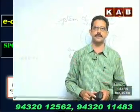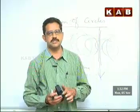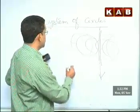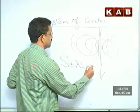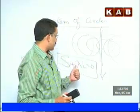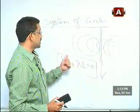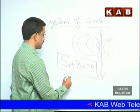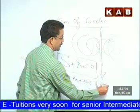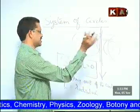How do you represent the system of circles in a coaxial system? We represent all the circles in a coaxial system by S plus lambda L equals zero. Here, S is any one of the circles and L is the radical axis.